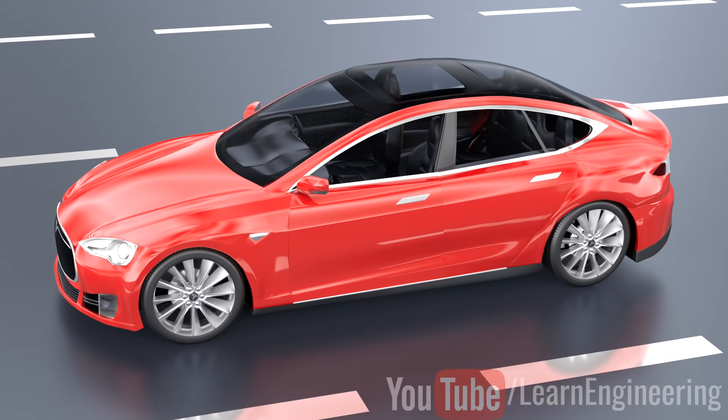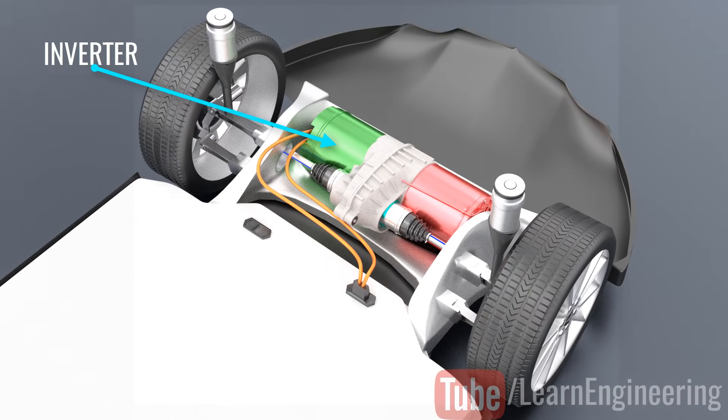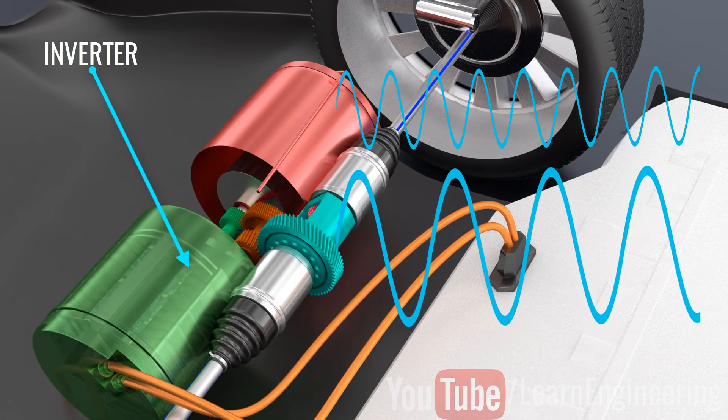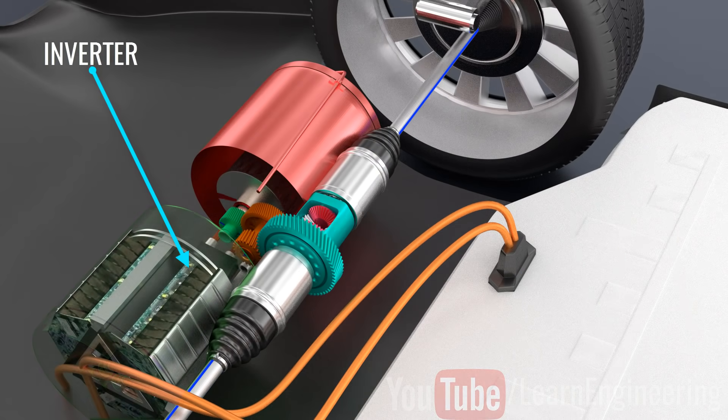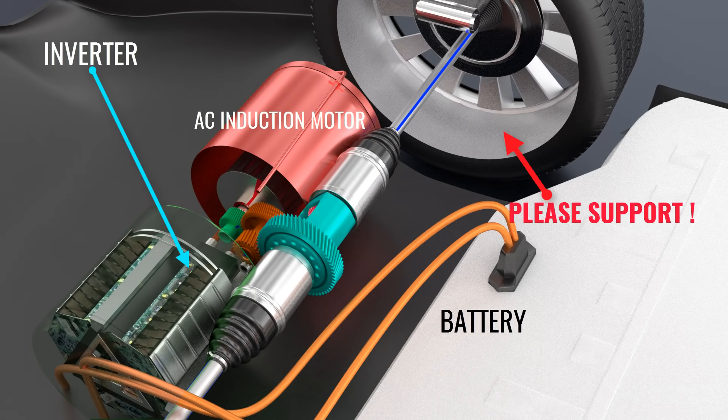Inverters used in electric cars have intelligent frequency and amplitude control. In fact, frequency controls the speed of an electric car and amplitude controls the power of it. This way, inverters act as the brain of electric cars by producing electric power ideal for driving conditions.